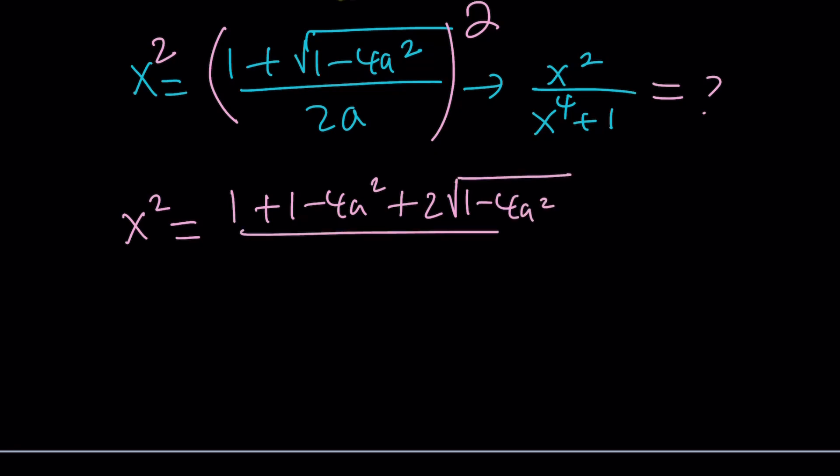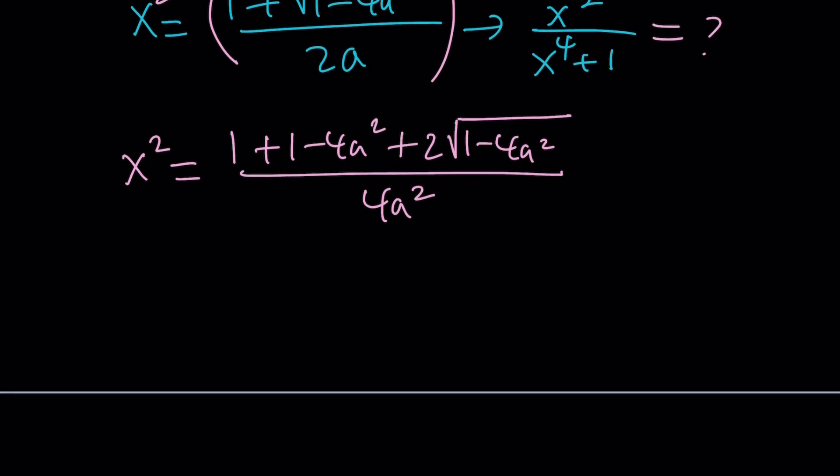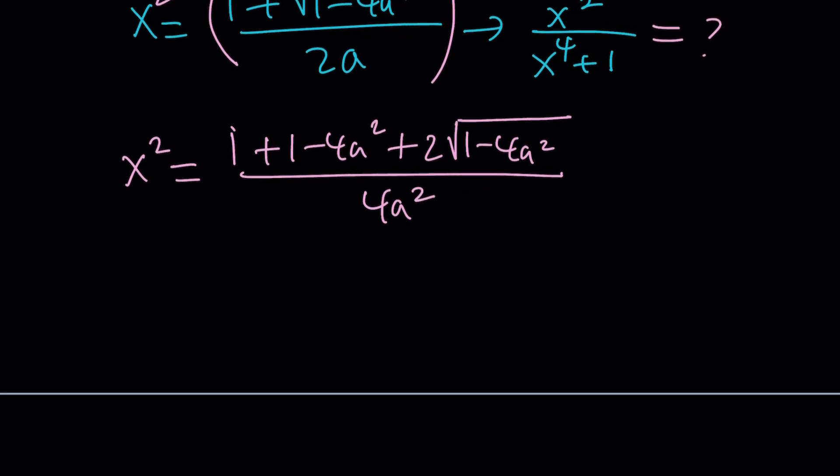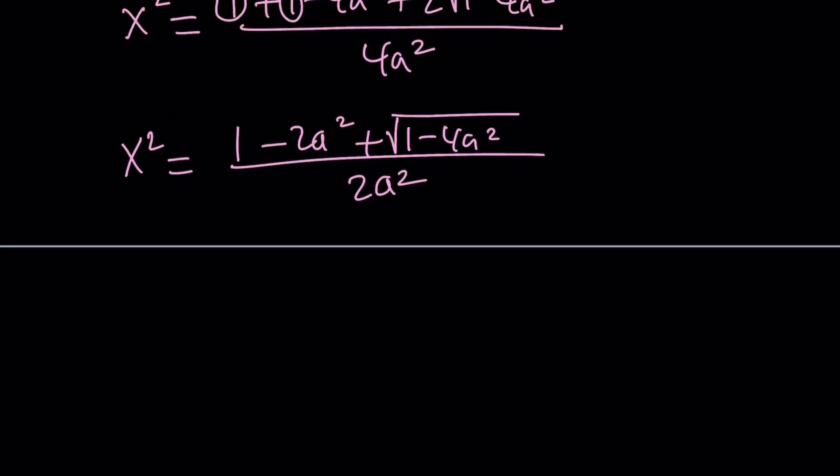And of course, all of that is going to be divided by the denominator squared, which is 4a squared. We could simplify this a little bit because 1 plus 1 is equal to 2. So everything is pretty much even. We can divide everything by 2. That's going to give us 1 minus 2a squared plus the square root of 1 minus 4a squared. All of that is divided by 2a squared. Because we squared it, it's going to be a squared. So this is my x squared.